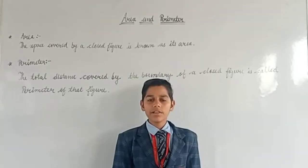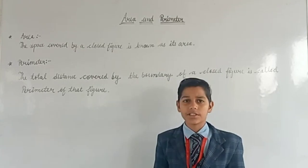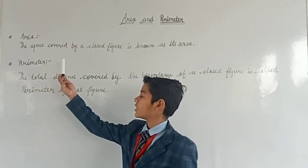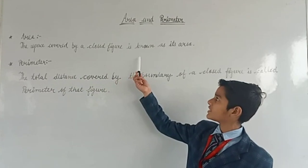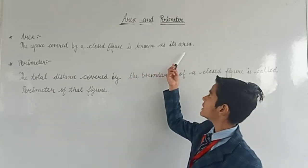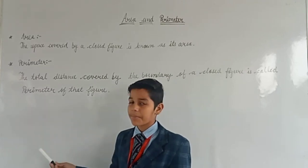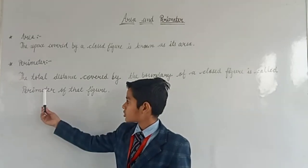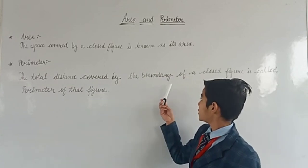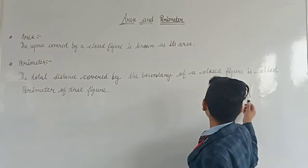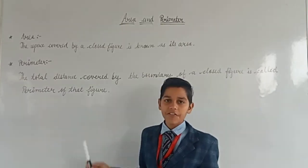So now we will learn about area and perimeter. What is area? The space covered by a closed figure is known as its area. What is perimeter? The total distance covered by the boundaries of a closed figure is called the perimeter of that figure.